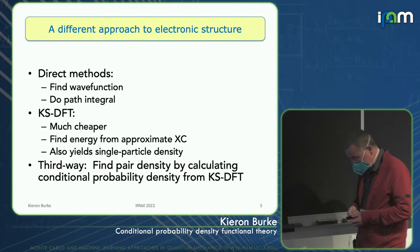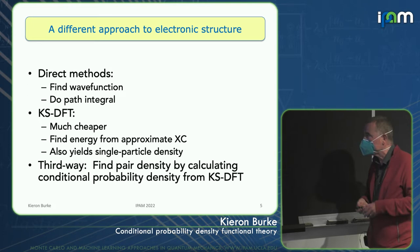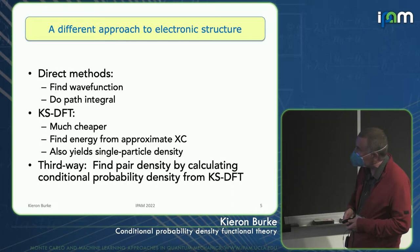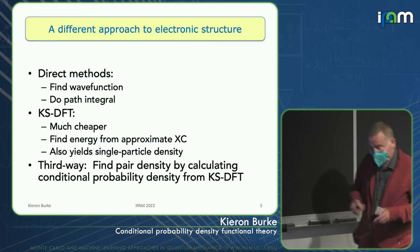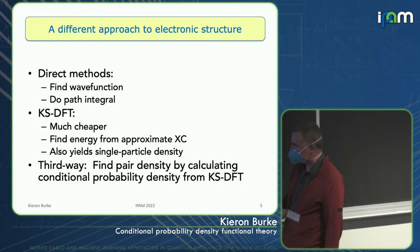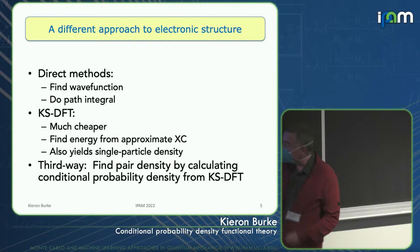This is a different way of doing electronic structure. We've heard about wave functions found with neural networks, path integrals, traditional quantum chemistry methods. Then there's Kohn-Sham DFT, which is typically much cheaper, so you can do bigger systems. You find the energy from an approximate exchange-correlation functional — that's how the whole thing works. It yields a single particle density. In principle it's exact; in practice it has endless problems, but turns out to be useful in an awful lot of situations.